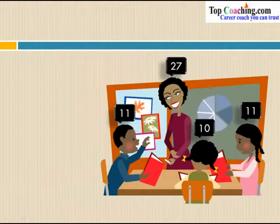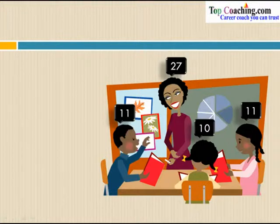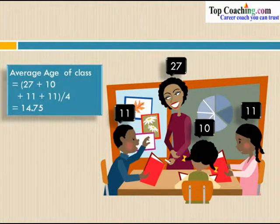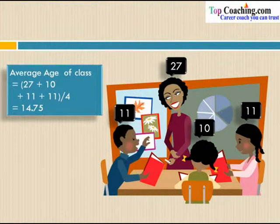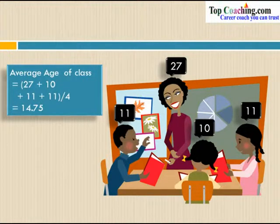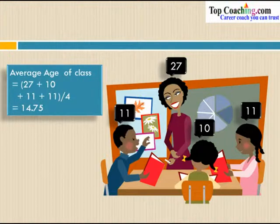Let's go back to the second problem — finding the average age of the class. The average age would be (27 + 10 + 11 + 11) divided by 4, as those are the respective ages of all four members. We get 14.75 as the average age of this class. Using the formula for mean, we have calculated the answer.